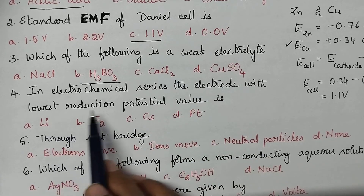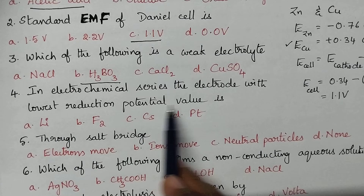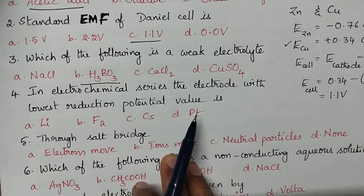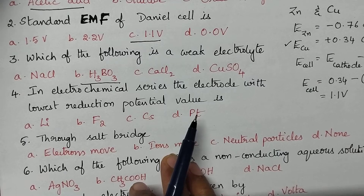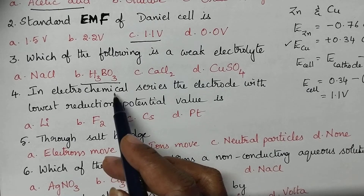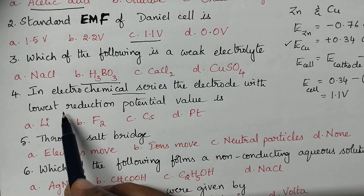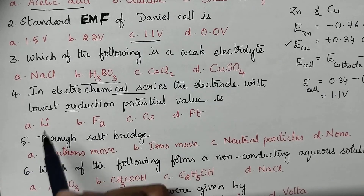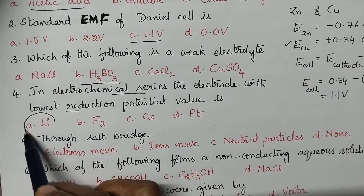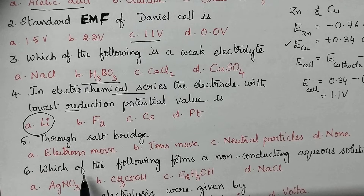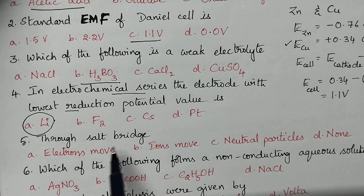In the electrochemical series, the electrode with the lowest reduction potential value — the metal which occupies the top position — is lithium. Lithium has the lowest reduction potential in the electrochemical series.